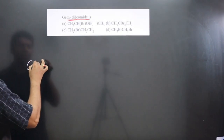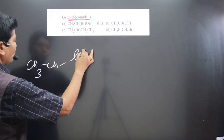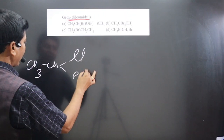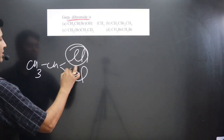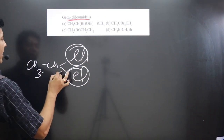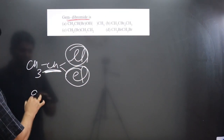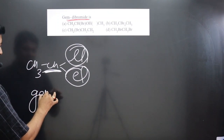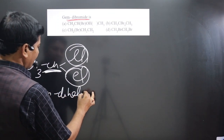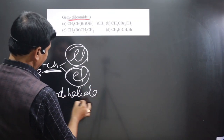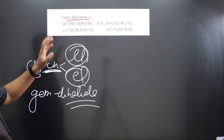For example, we have CH3 and then CH — we can see 2 halogens are directly connected to the same carbon. This is one halogen and this is also a halogen connected to the same carbon. Hence we can say this is gem dihalide.